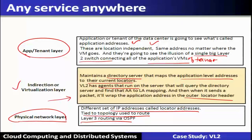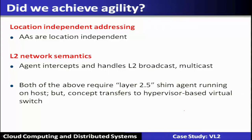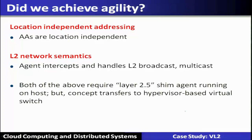This virtualization layer supports any service anywhere — that is agility. Location independent addressing is achieved through application addresses. As far as L2 network semantics are concerned, these agents intercept and handle L2 broadcast, multicast, and so on. Both issues require a layer 2.5 shim agent running on the host, and the concept transfers to the hypervisor-based virtual switch.